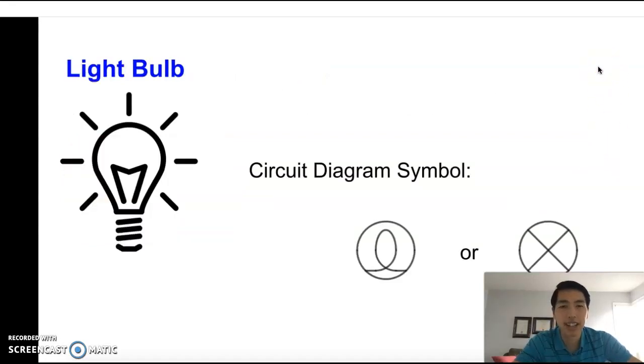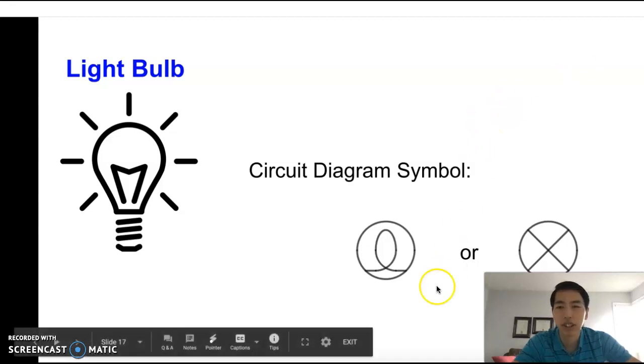The next is a light bulb. So for a light bulb, I'm going to use a circle with a loop-the-loop inside of it. Or something easier to draw is a circle with an X inside of it. So that's going to be the symbol for a light bulb.